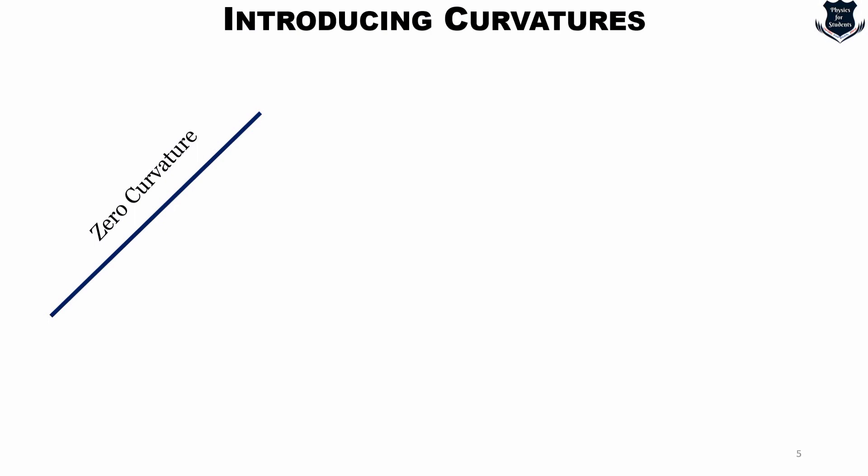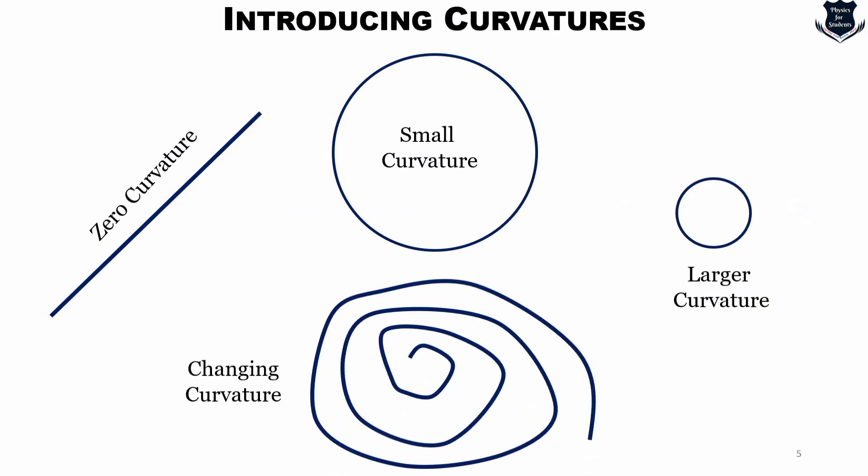A straight line should have a zero curvature, whereas a circle should have a curvature which increases as the radius increases. A very large circle should have a very small curvature, and this is an example of what is called a changing curvature. So understanding and quantifying the concepts of these curvatures is our primary goal. So the curvature of the spiral increases as one travels towards the center.